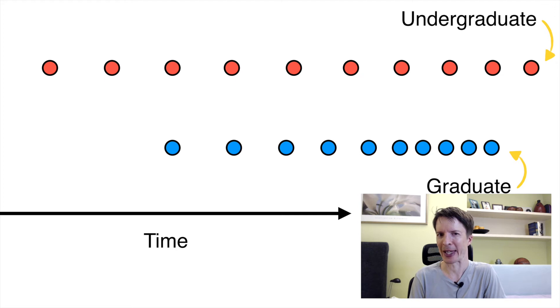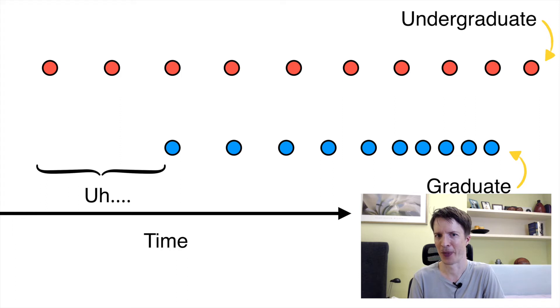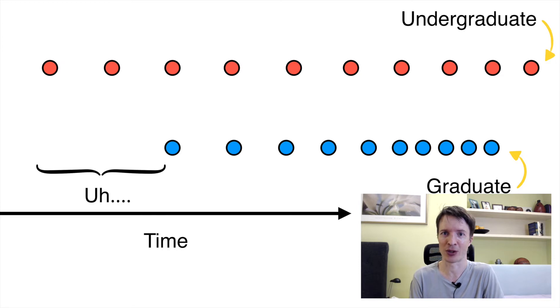But there's something really odd about the grad student pattern. At the beginning, the grad student doesn't make any diagnoses for quite some time. The undergrad student has already diagnosed two patients before the grad student has even diagnosed one. What are they doing — are they just sitting there? No. The answer to what they're doing during that time is the key to understanding what grad students do differently.